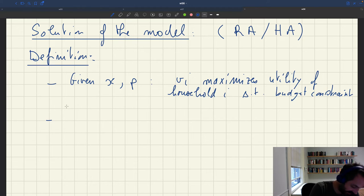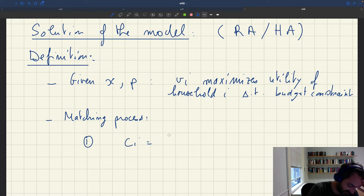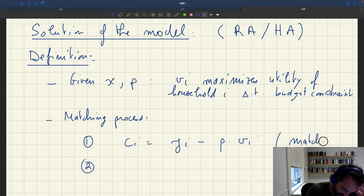Then you have the matching process. The matching process imposes two extra things. So first, because of the matching process, part of the visits are costly. So we know that consumption ci is just going to be equal to how much you buy, yi minus ρ vi. So this is basically saying that there is a matching cost.